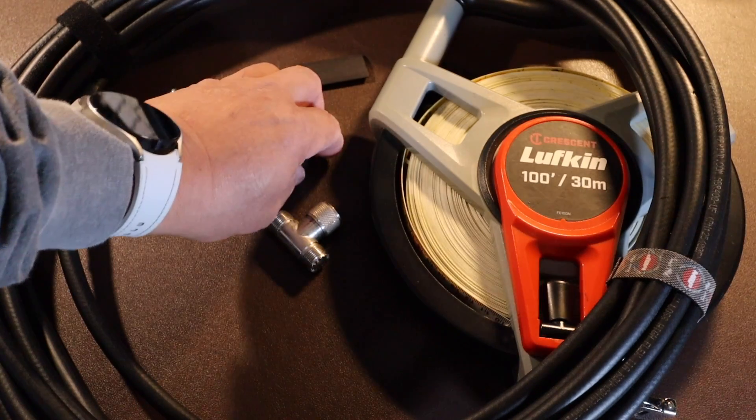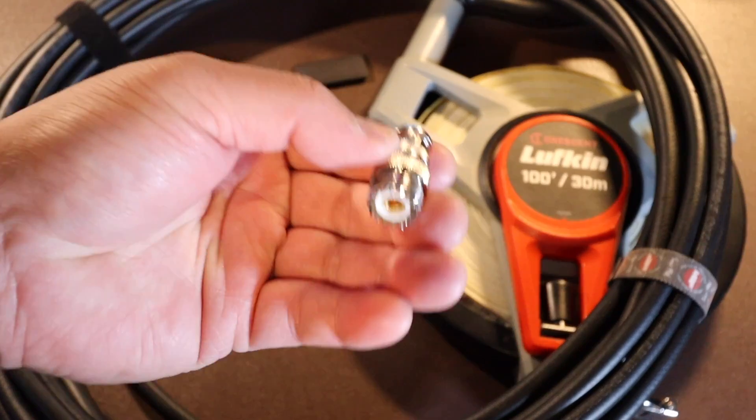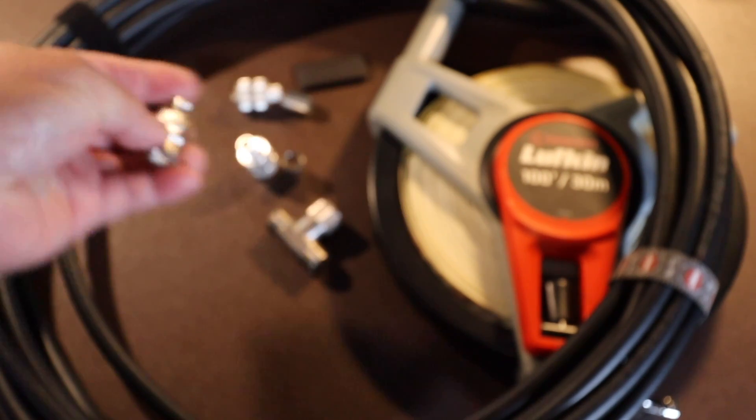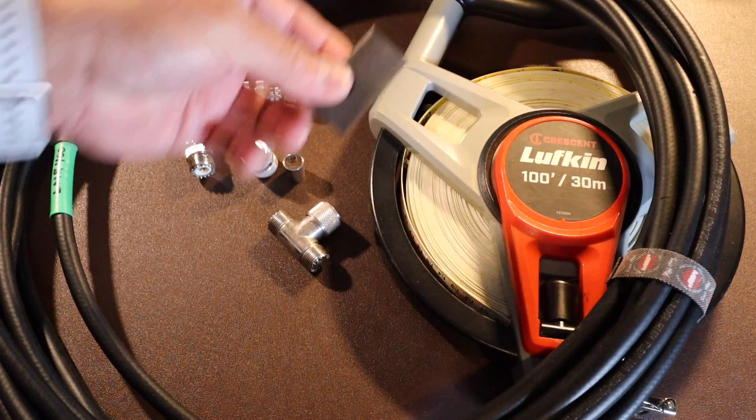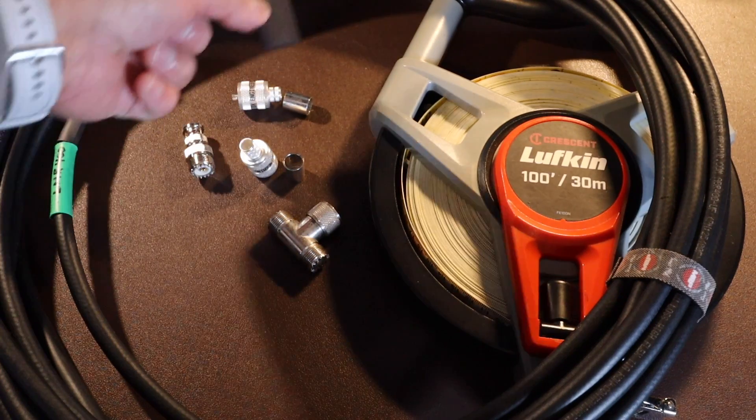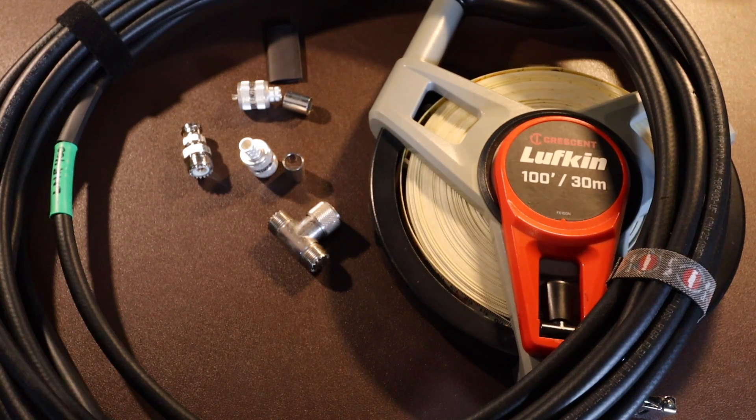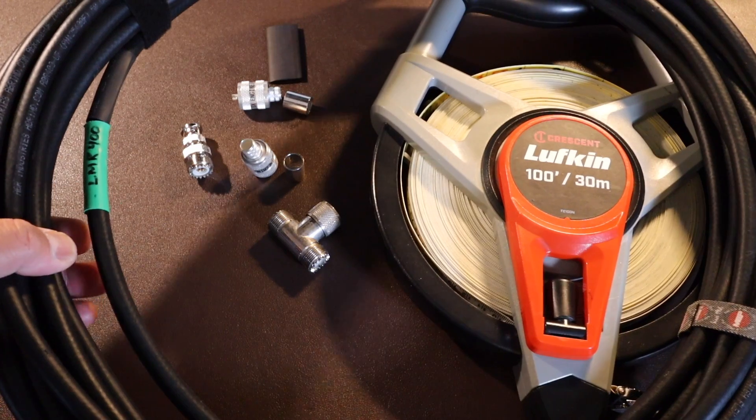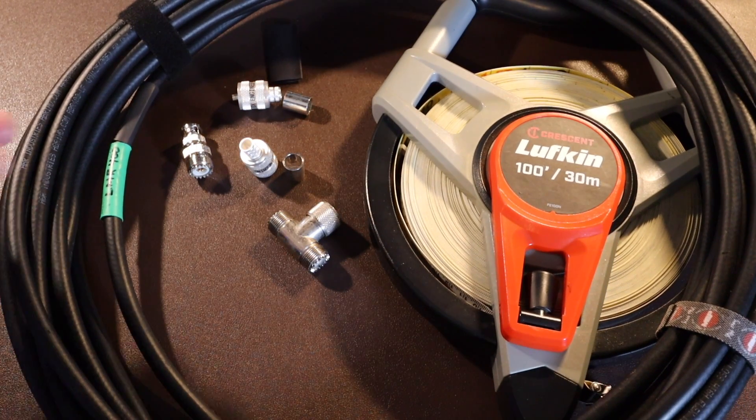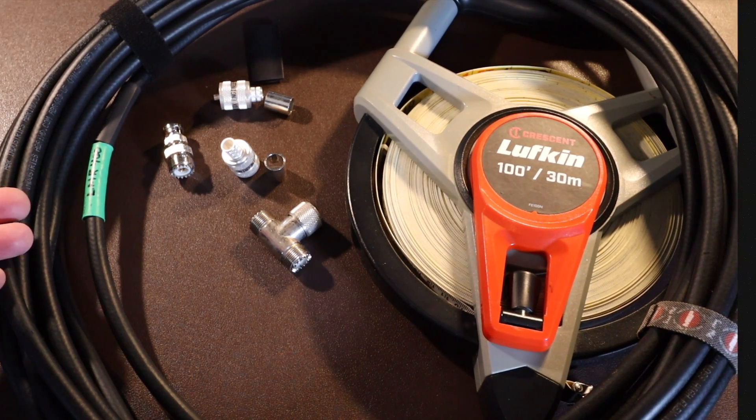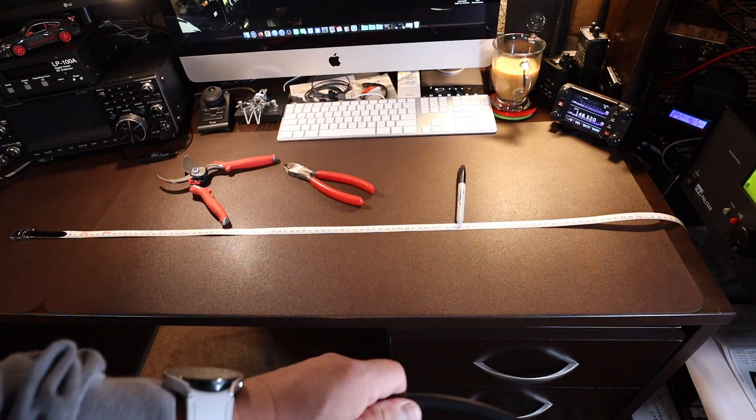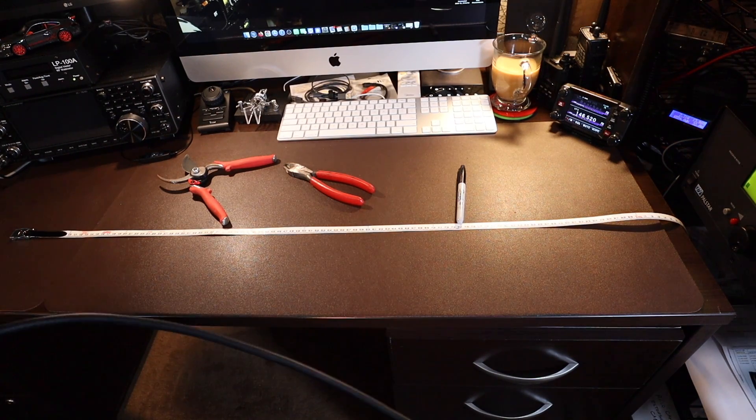Got two of those and then I have this here, SO239 to BNC connector and the heat shrink. Measuring tape and I have LMR400. I had a spare cable here. And maybe you can use RG213 or RG8. I don't have a workshop so I'm here just in my shack.